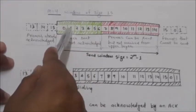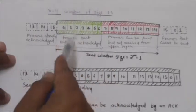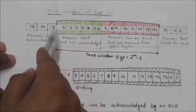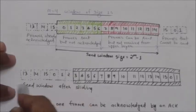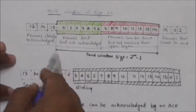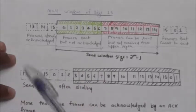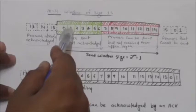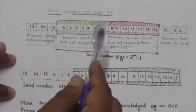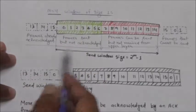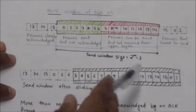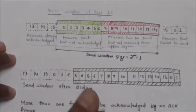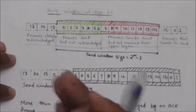When frames with sequence numbers 0, 1, and 2 are acknowledged, the send window slides 3 slots to the right. You can see the send window after sliding in this figure. The send window can slide one or more slots to the right when an acknowledgement arrives from the other end.